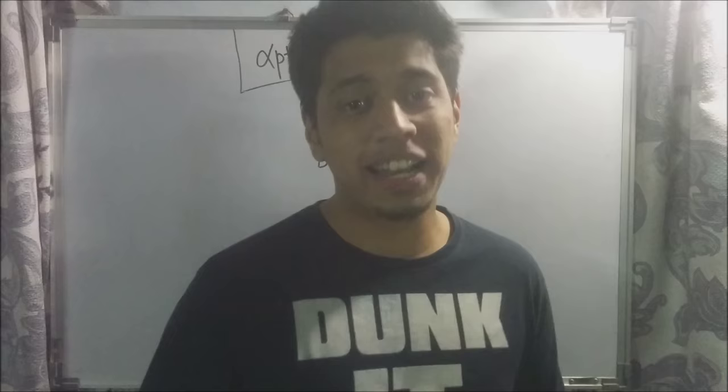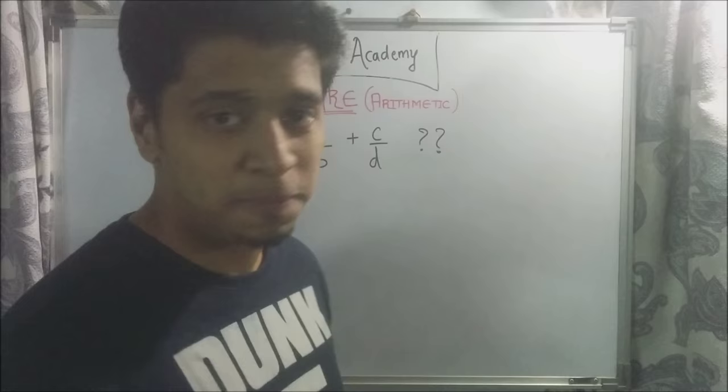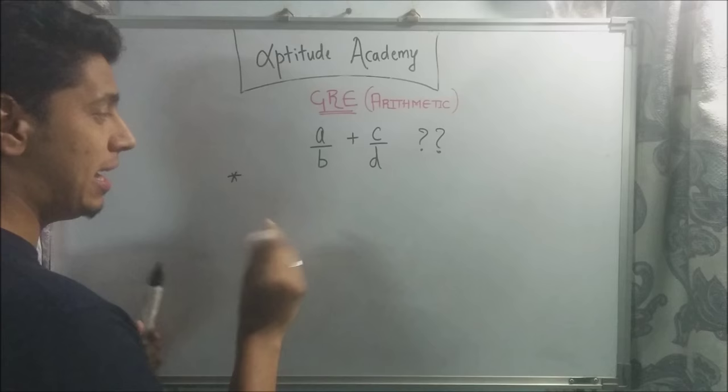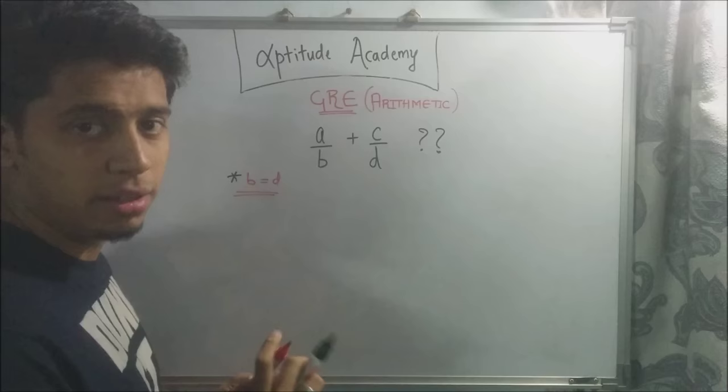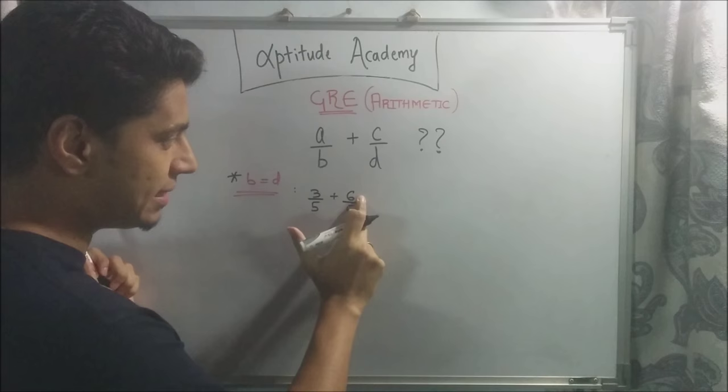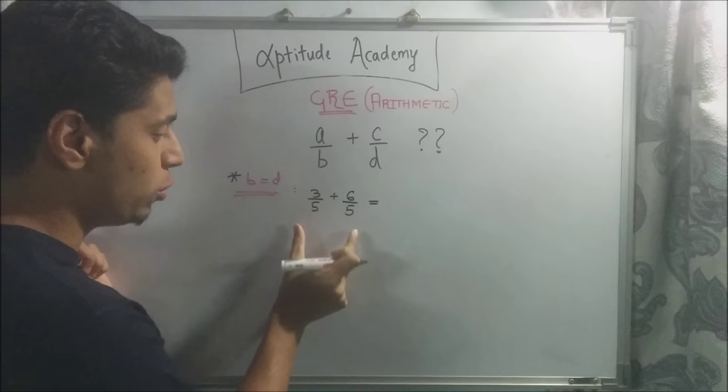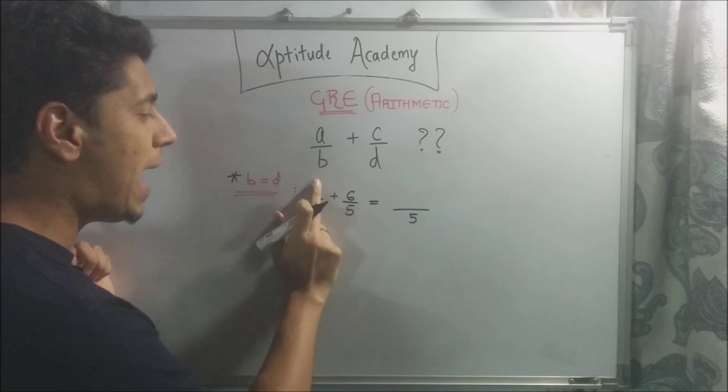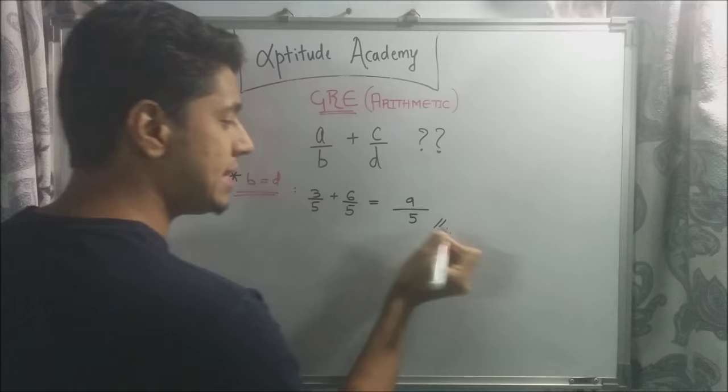Now suppose you have two fractions. You have A by B and you have C by D, and you're asked to add them. What are you going to do? Alright, so now you have two scenarios. One scenario is when B and D are equal. When B and D are equal, life is easy. So what do you do? Let's take an example. Say you have 3 by 5 and you have 6 by 5. Now A is 3, C is 6, B is 5, D is 5. When B and D are equal, that is the denominators are equal of the two fractions, what you do is you simply write the denominator 5 and you add both the numerators. So 3 plus 6 is 9. So your answer is 9 by 5.